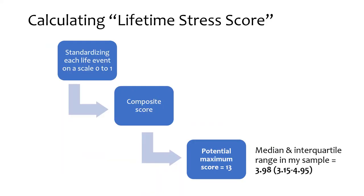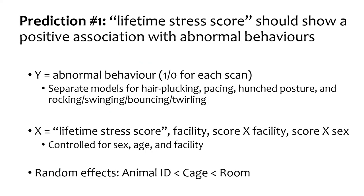To test prediction one, a mixed logistic model was run with the outcome being the abnormal behaviour in binomial format — presence or absence in each scan — predicting the odds of the behaviour being detected. We chose logistic over linear models because time budgets of abnormal behaviours are unlikely to meet model assumptions. Separate models were run for each abnormal behaviour subcategory, with predictor variables including the composite lifetime stress score, facility, and interactions between score and facility and score and sex. Random effects were animal ID nested in cage nested in room. For prediction two, I used AIC to assess model fit, comparing models with demographic variables only versus models with all 13 welfare-relevant life events.